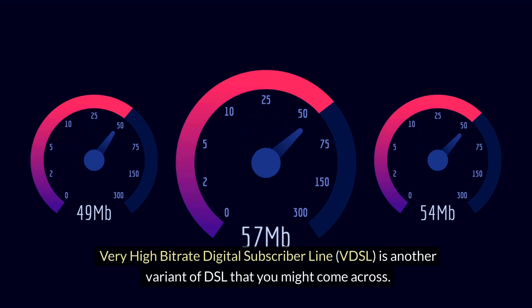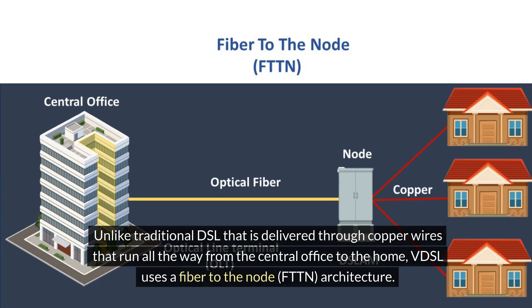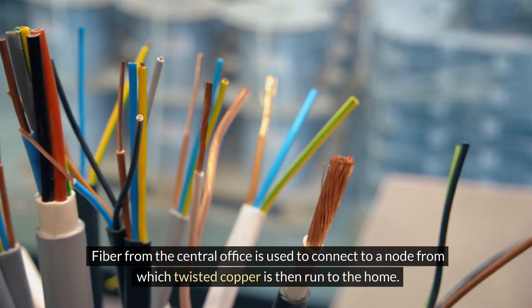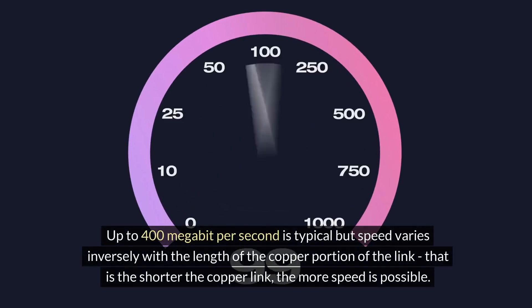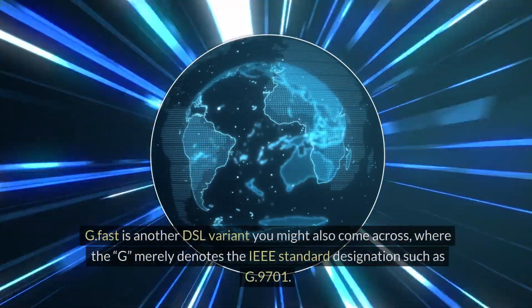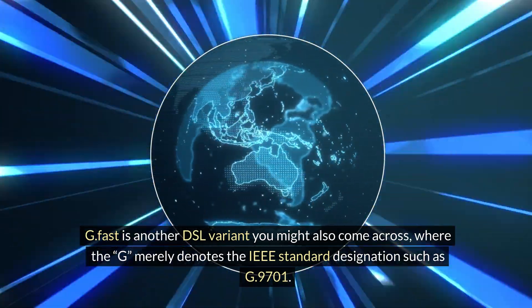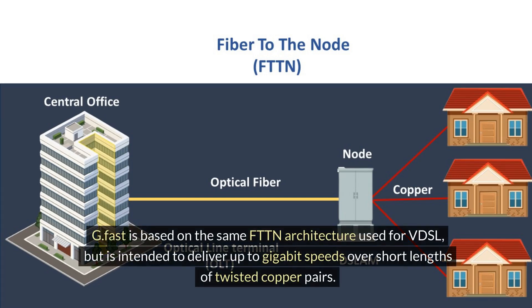Very high byte rate digital subscriber line (VDSL) is another variant of DSL. Unlike traditional DSL delivered through copper wires running all the way from the central office to the home, VDSL uses a fibre to the node (FTTN) architecture. Fibre from the central office connects to a node, from which twisted copper is then run to the home. Up to 400 megabit per second is typical, but speed varies inversely with the length of the copper portion. G-fast is another DSL variant, where G denotes the IEEE standard designation such as G9701. G-fast is based on the same FTTN architecture as VDSL but is intended to deliver up to gigabit speeds over short lengths of twisted copper pairs.